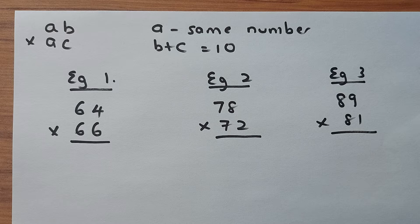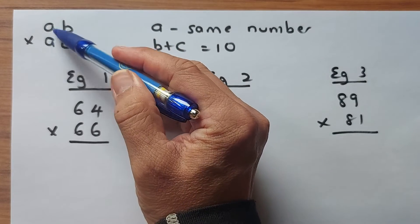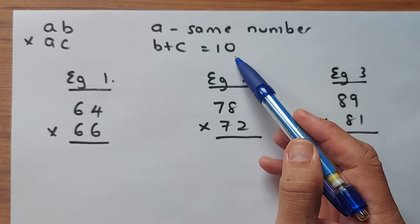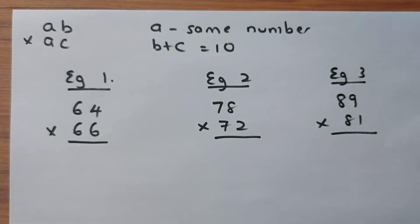So the first trick is that the first digit A and A must be the same and the second digit B and C they must add up to 10. If we have this scenario then we can use this technique to solve any two digit multiplication.